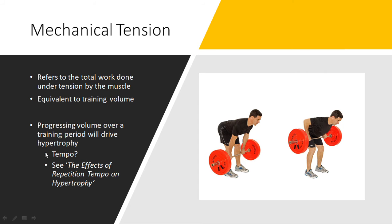Something to note in terms of progressing training volume is tempo — is tempo even important? There's a video on this channel covering the effects of repetition tempo on hypertrophy, but to cover it briefly: tempo doesn't actually matter too much for hypertrophy as long as training volume is going up and we're controlling both the concentric and eccentric portions of the lift so the muscle is actually under tension. If we're letting gravity do the work on the eccentric, we don't actually have as much tension on the muscle. So when increasing volume, ensure the muscles are still doing the work under tension, and if you use a slower tempo, maintain that tempo consistently so we're still getting more total work done throughout the training period.